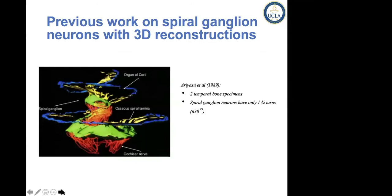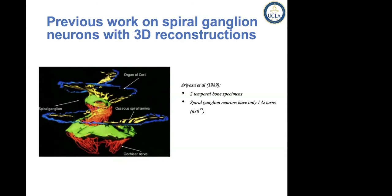This is something that Fred did back in 1989 — I believe he was one of the first ones to look at the distribution of spiral ganglion neurons using three-dimensional reconstruction. Ariasu in 1989, from the San Francisco area, looked at the distribution of spiral ganglion neurons in humans for the first time. They used two bones from the House Institute. The green indicates the location of spiral ganglion neurons, blue is the organ of Corti, yellow is the osseous spiral lamina, and orange is the cochlear fibers.